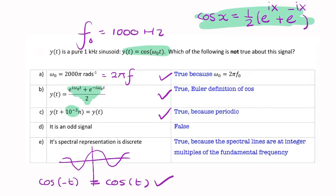And the answer is yes. So, therefore, it's an even function. If it were an odd function, then x of minus t would be minus x of t.